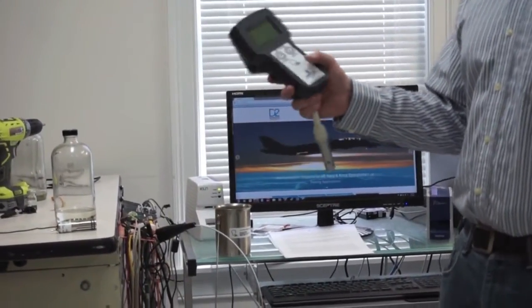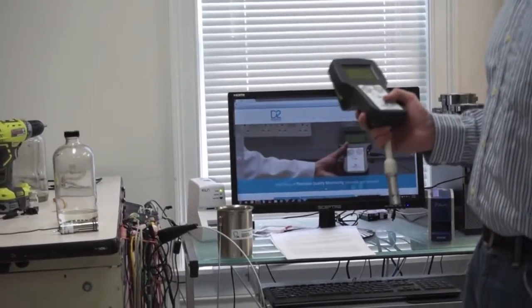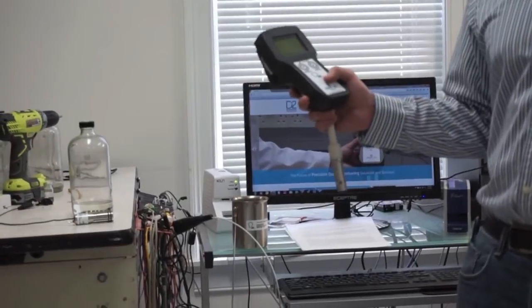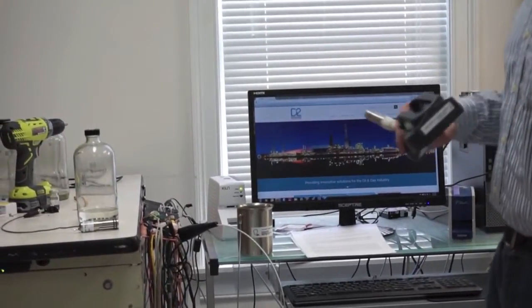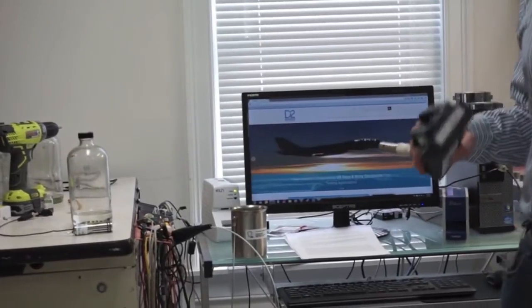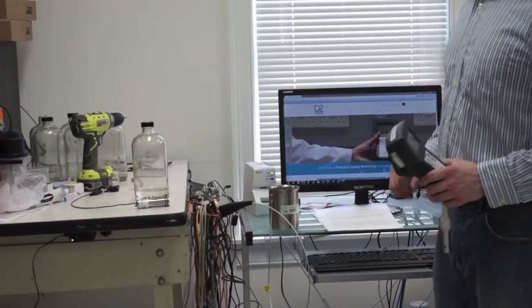Today we're going to run a jet fuel sample for conductivity measurement according to ASTM D2624, which this device is listed in and is the standard for measuring electrical conductivity of jet fuel. We need a metal beaker that is grounded to run the sample.